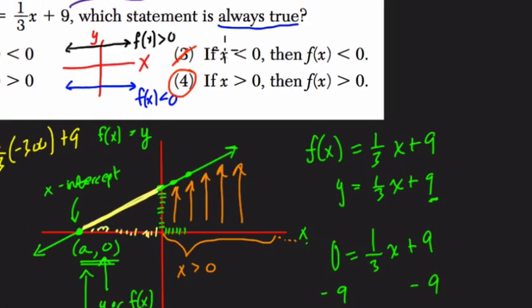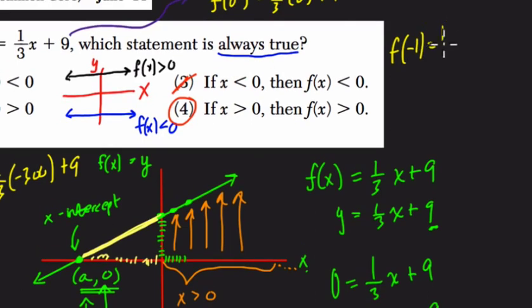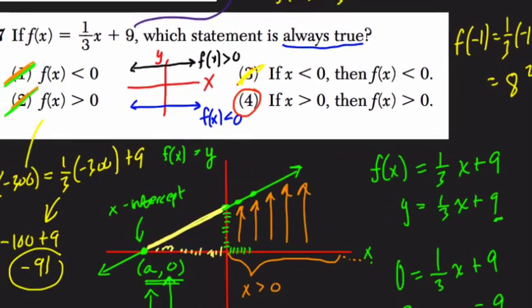And then here, if you want to test this one out, plug in numbers for x less than 0, like negative 1. If you plugged in x is negative 1, you would get f of negative 1 equals 1 third times negative 1 plus 9. And that's a positive result. That's negative 1 third plus 9 is 8 and 2 thirds. So that's not true. And then if you tried x values larger than 0, you would realize that the outputs f(x) are always larger than 0.